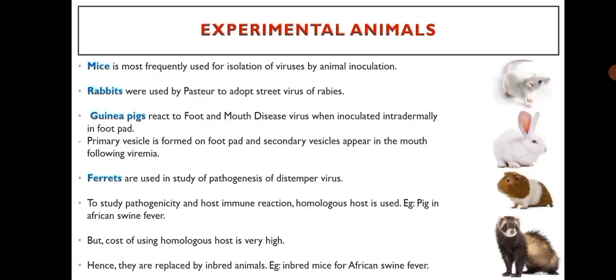Mice are most frequently used for isolation of viruses by animal inoculation. Rabbits were used by Pasteur to adapt street virus of rabies. Guinea pigs react to foot and mouth disease virus when inoculated intradermally in the footpad. Primary vesicles are formed on the footpad and secondary vesicles appear in the mouth following viremia.